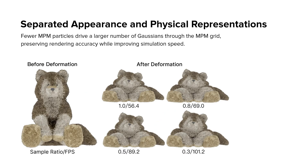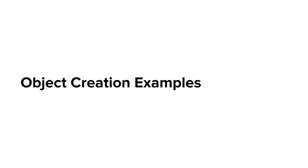We use fewer MPM particles to drive a larger number of Gaussians through the MPM grid, preserving rendering accuracy while improving simulation speed. In a wolf simulation, reducing MPM particles to 30% of Gaussian kernels slightly increased volume but doubled FPS, maintaining visual quality.